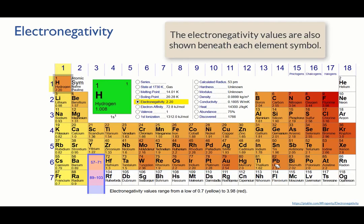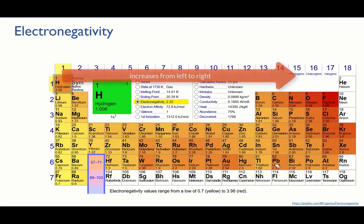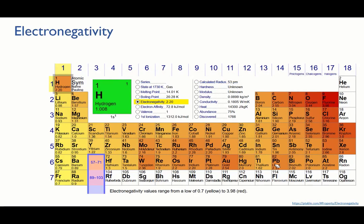First, electronegativity increases from left to right across the periods, and increases from bottom to top of each group, much the same trend as ionisation energy.